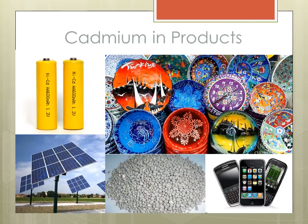Cadmium in its alloys can be found in a variety of products. Cadmium compounds such as cadmium sulfide and cadmium selenide are used as pigments to color glass, ceramics, and plastics. Cadmium sulfide and cadmium telluride are also used in solar panels and electronics. Cadmium is also used to make nickel cadmium batteries and is a component of phosphate fertilizer.